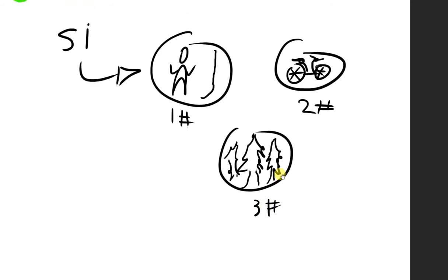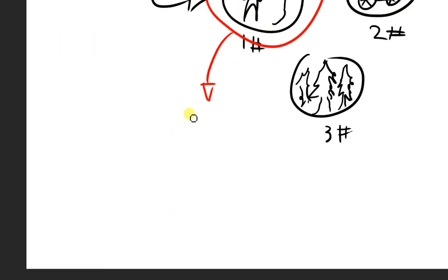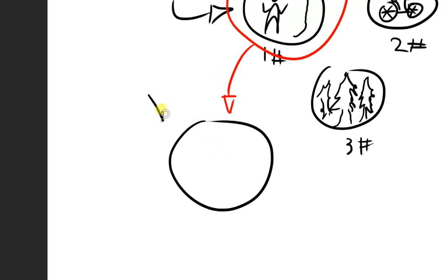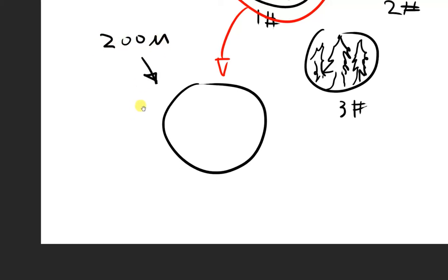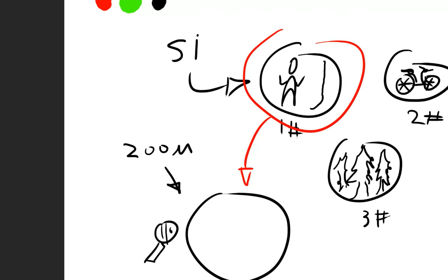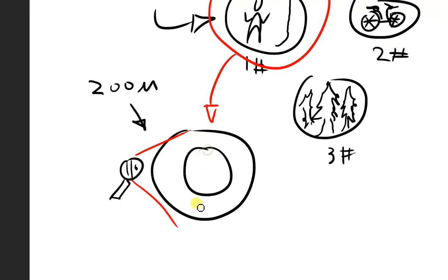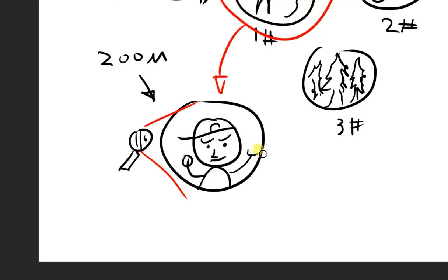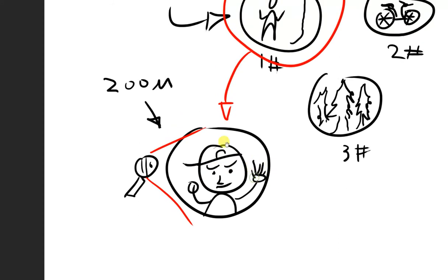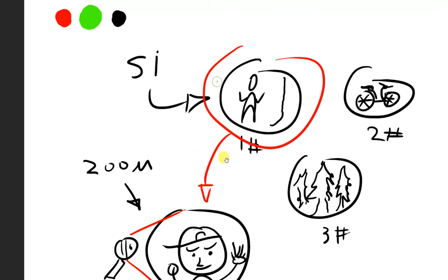The introverted sensing user can grab these memories and zoom in on them really, really well — like a magnifying glass. They can zoom in on these memories in great detail. For example, with a memory of a person, they can zoom in on their face, see what kind of face this person had, what kind of clothes they were wearing, how their face looks, how their fingers look. That's how introverted sensing works.